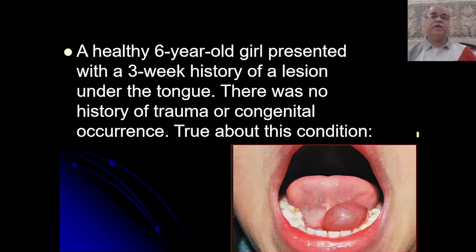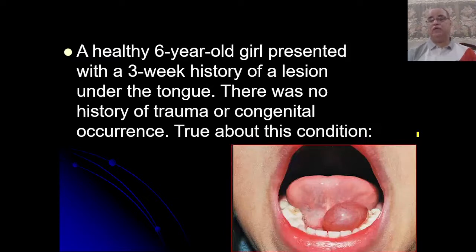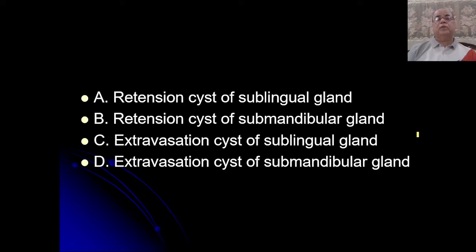A small scenario: a healthy six-year-old girl presented with a three-week history of a lesion under the tongue, with no history of trauma or congenital occurrence. On the side of the lingual frenulum there is a bluish swelling. The question for viewers to answer in the comments is: Is it a retention cyst of the sublingual gland, a retention cyst of the submandibular gland, an extravasation cyst of the sublingual gland, or an extravasation cyst of the submandibular gland?